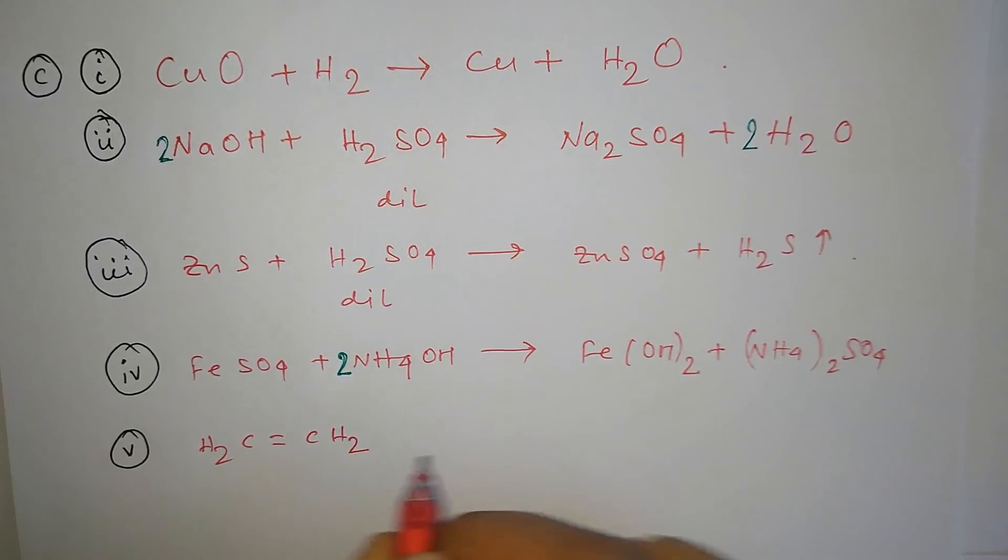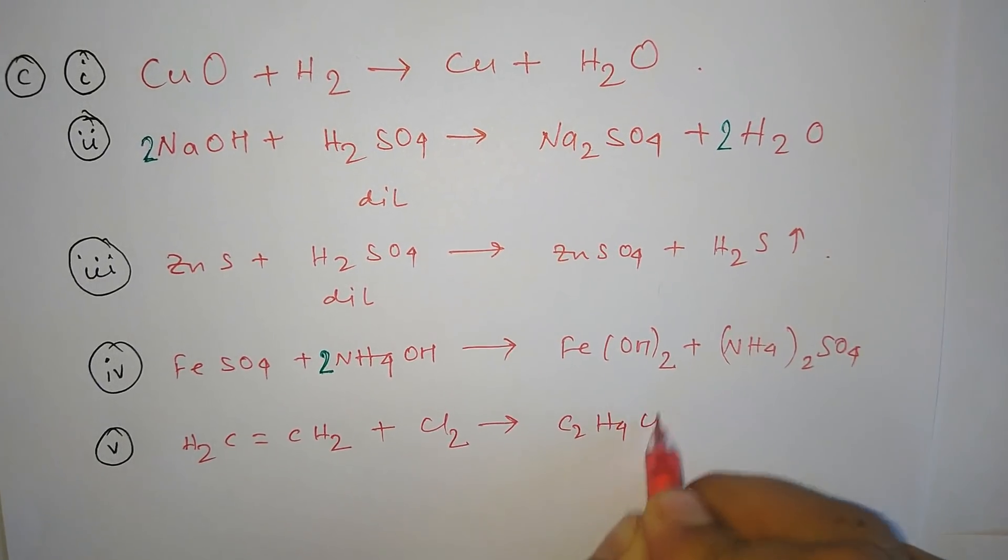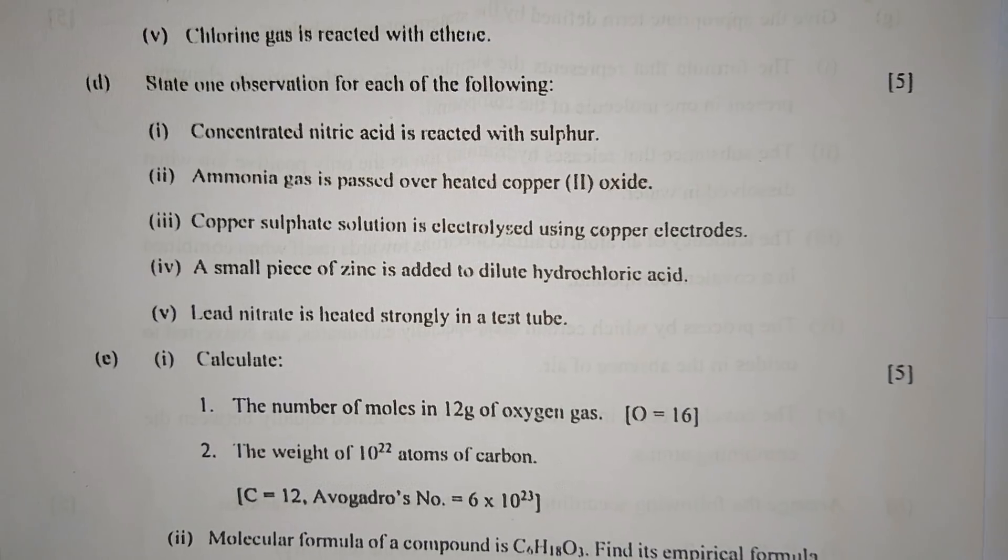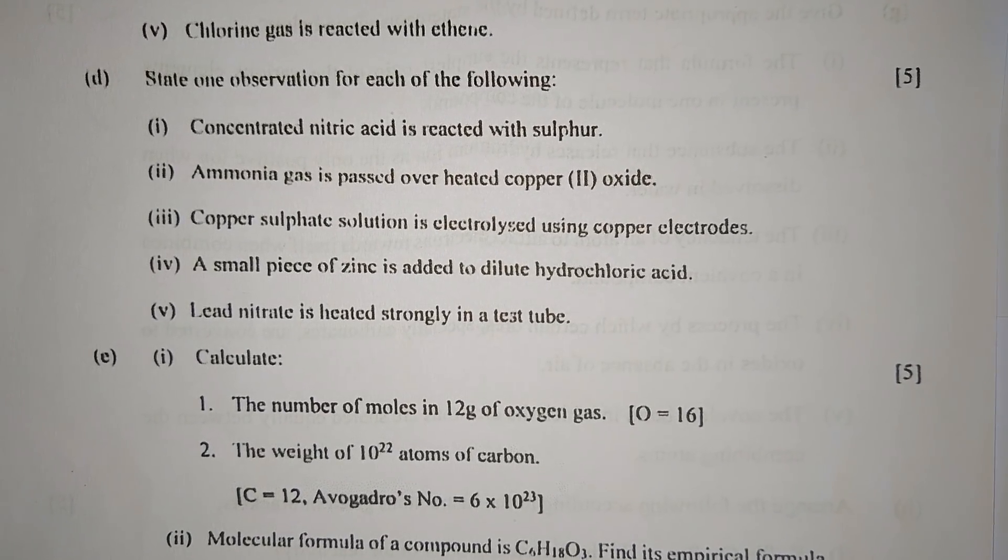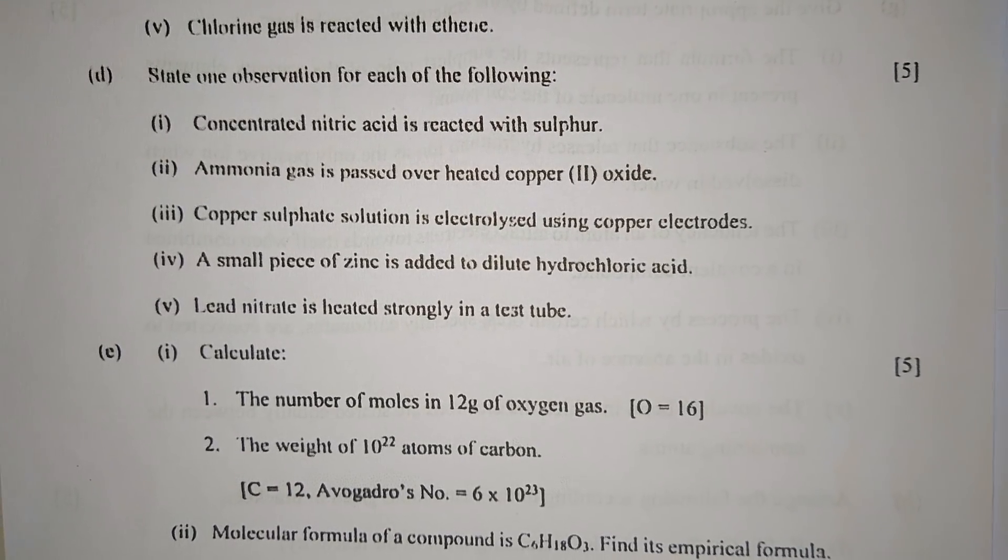Part five: Chlorine gas is reacted with ethene. Ethene reacts with chlorine to form C2H4Cl2.